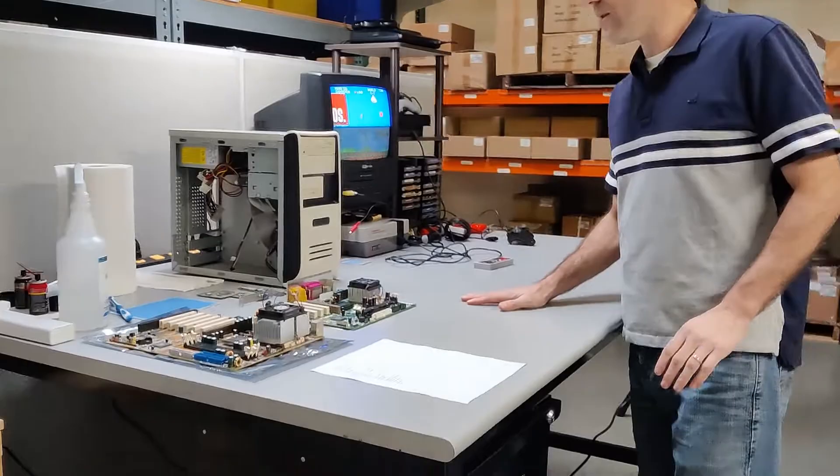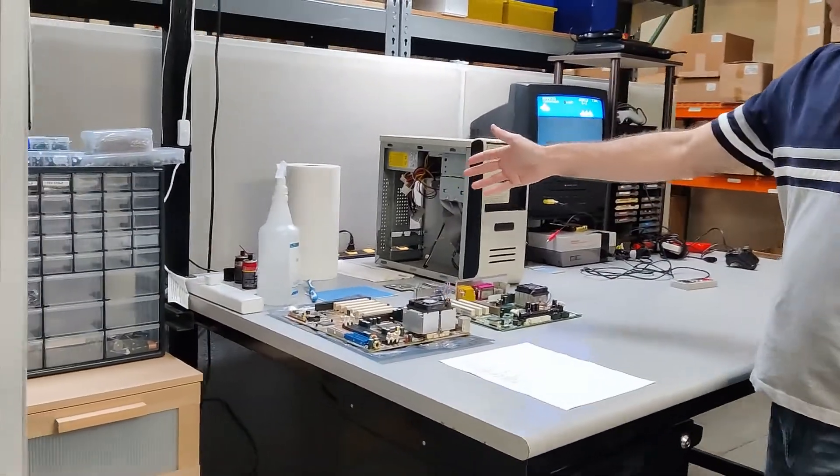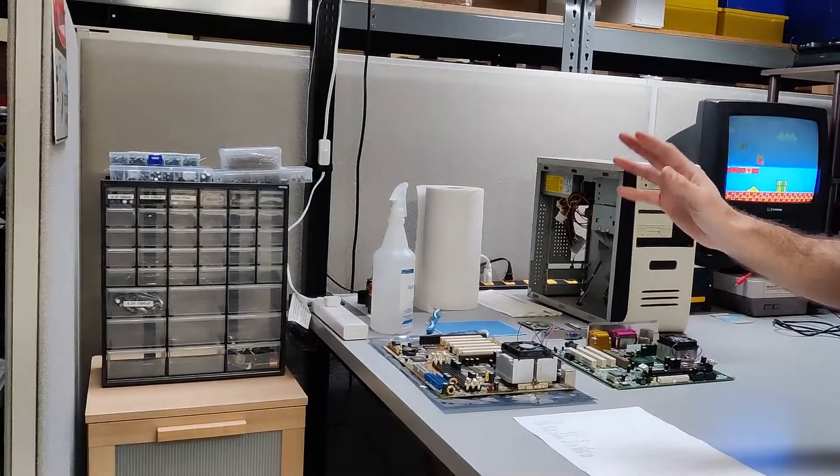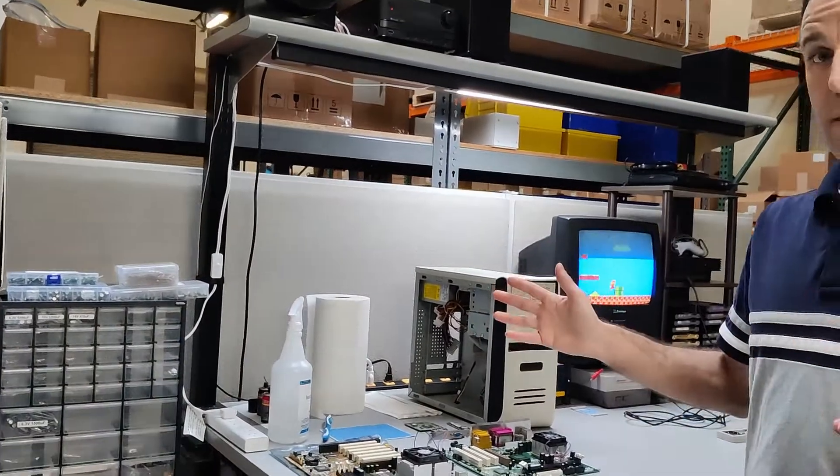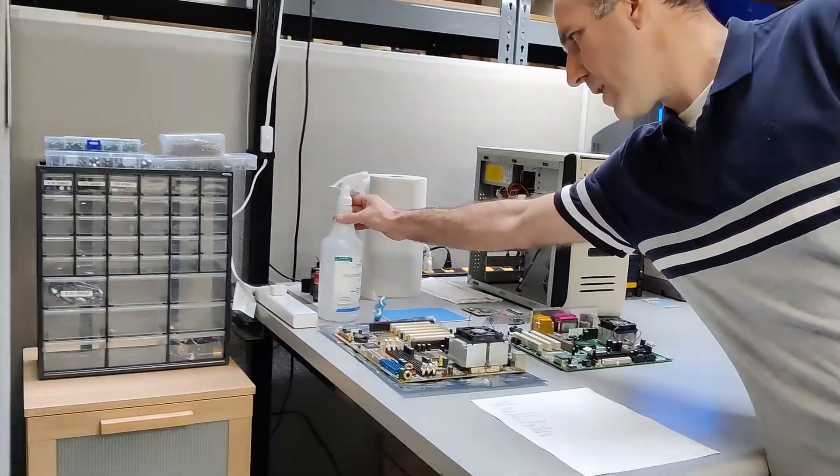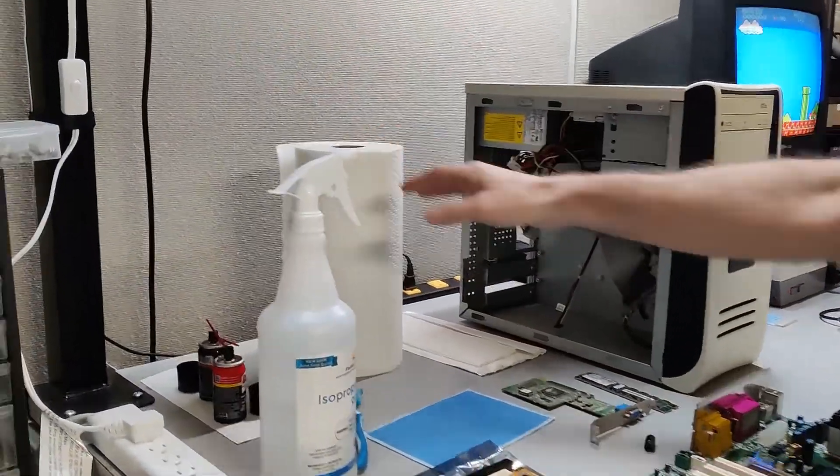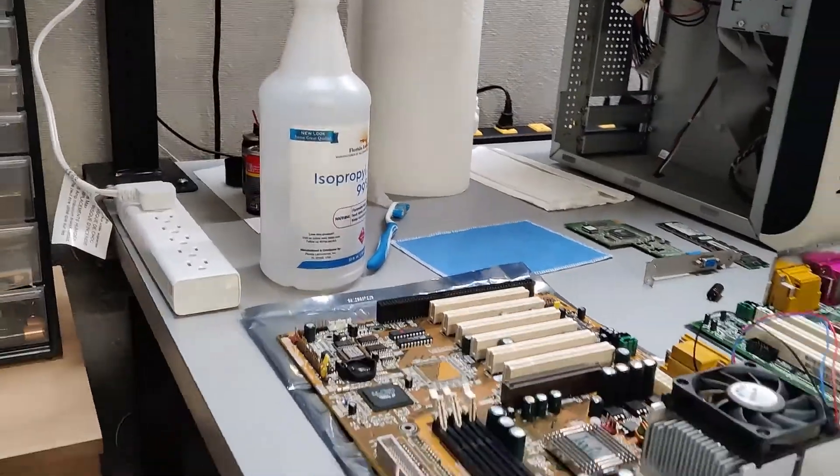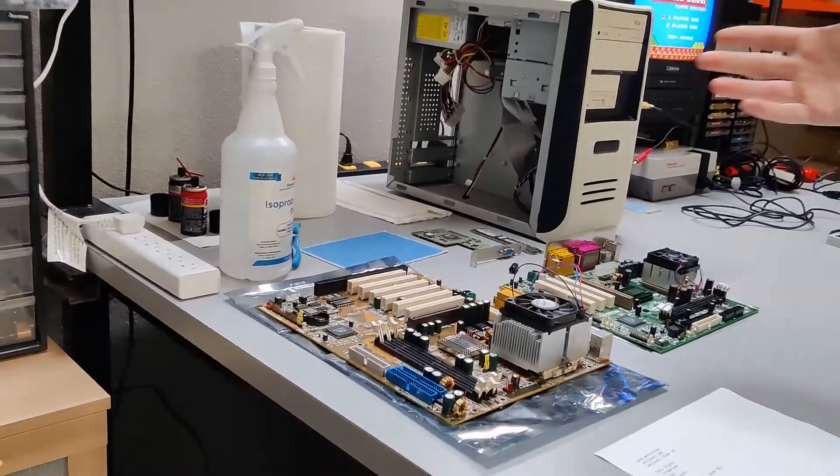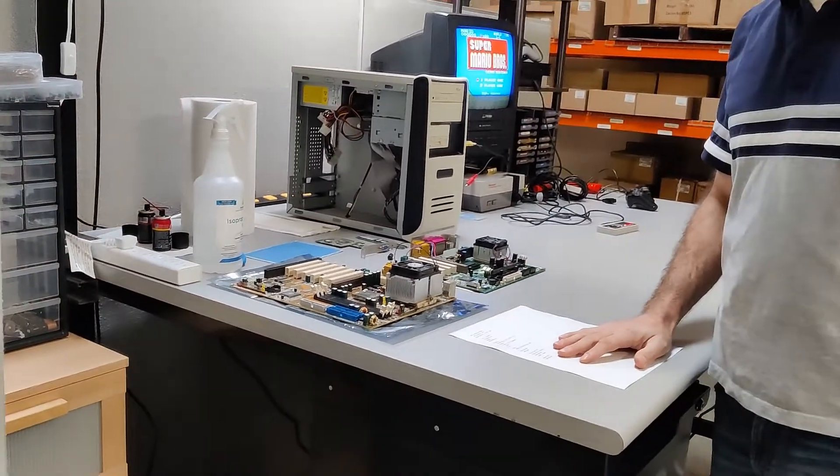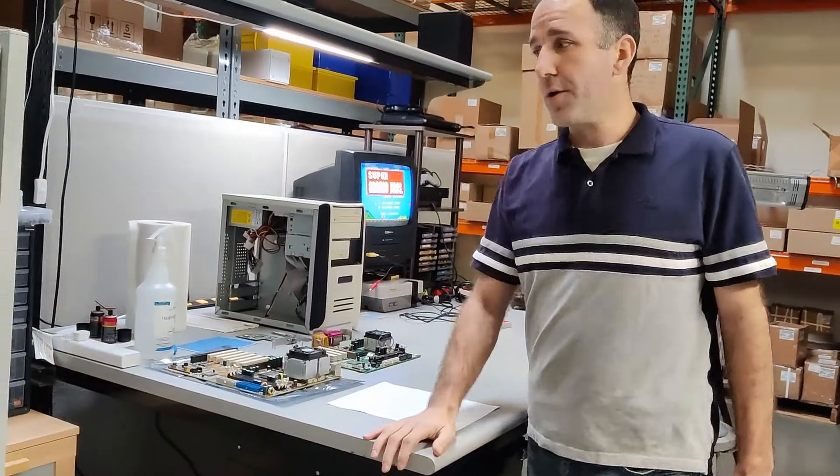This is a cleaning station that I've got. This is going to be another big chunk of your issues that you run into is just a dirty connection. Get yourself some isopropyl alcohol, a toothbrush, and a roll of paper towels. Whether you're soldering or whether you're just cleaning a connection, you're going to run into a lot of dirty connections.